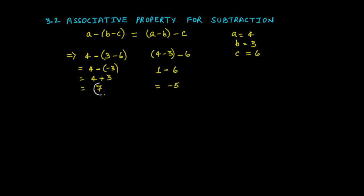We get 7 and -5, which are not equal. Therefore, this condition is not satisfied, and we can say that subtraction of integers does not follow the associative property. In the case of addition it follows the associative property, but subtraction does not.